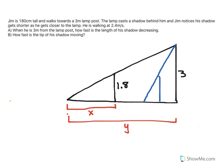Okay, here we have a related rate problem, and we know it's a related rate problem because there are speeds given in the question. He is walking at 2.4 meters per second, so that should jump off the page right there.